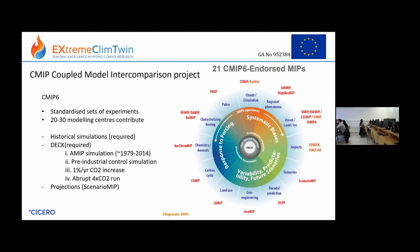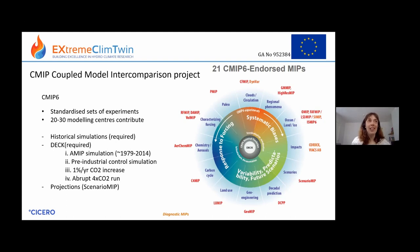CMIP is the Coupled Model Intercomparison Project, and we're currently on CMIP6. There have been other phases before — CMIP5, CMIP3, and earlier. They generally become more complicated over time with more experiments involved. They run a standardised set of experiments, with maybe 30 modelling centres contributing one or more models, because some modelling centres have more than one model.